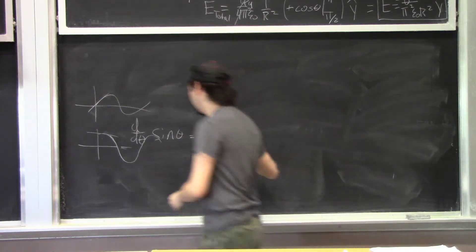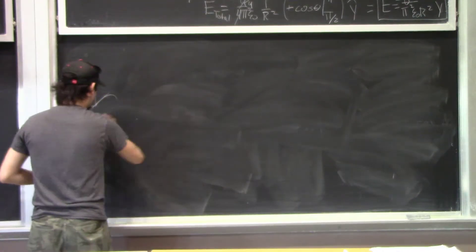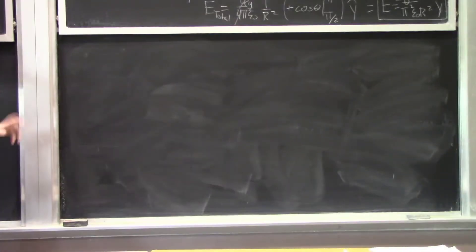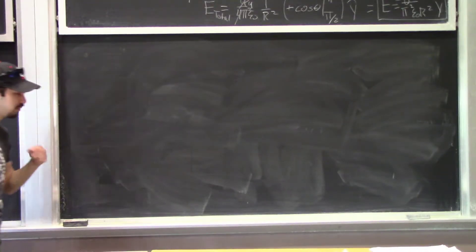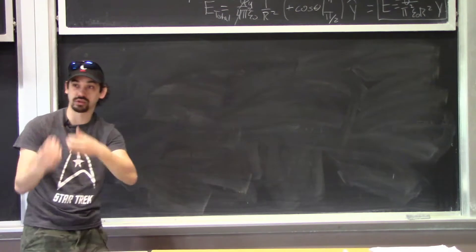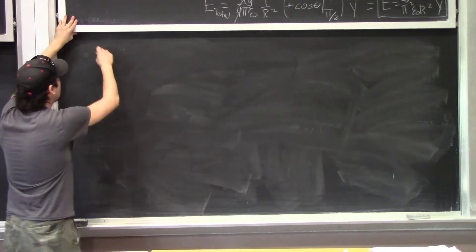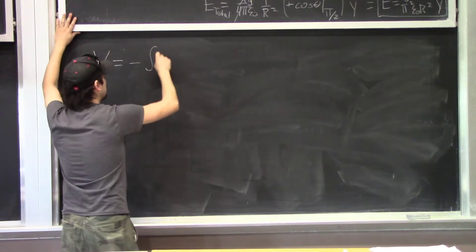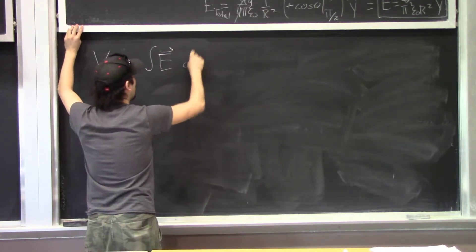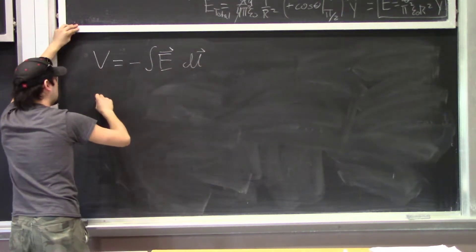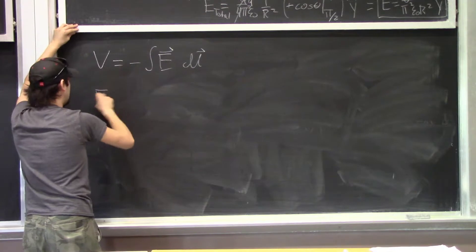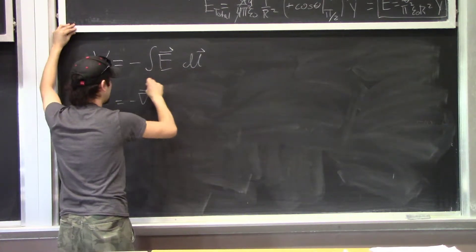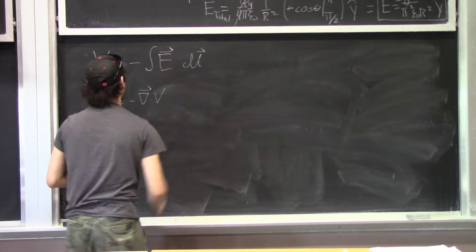The second part of the homework was to write these equations down and explain what they mean. We're going to talk about the physics today. The two equations are: V equals the negative integral of E dot dL, and E equals the negative gradient of V.